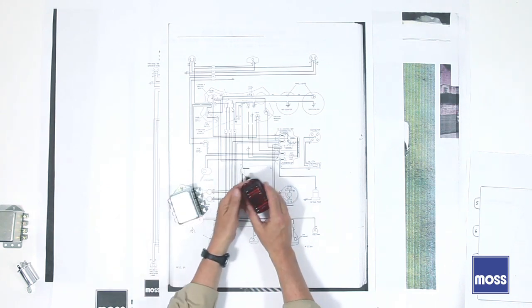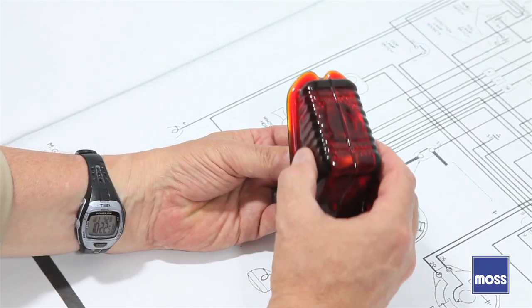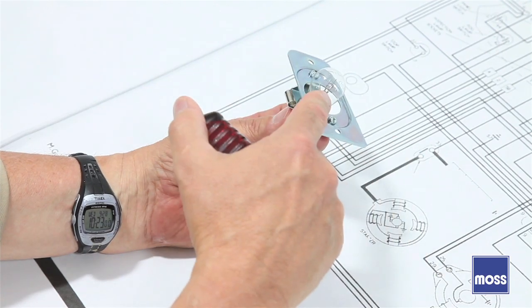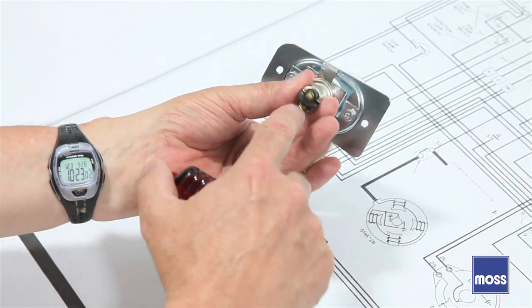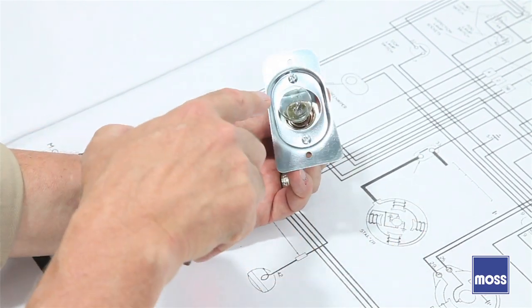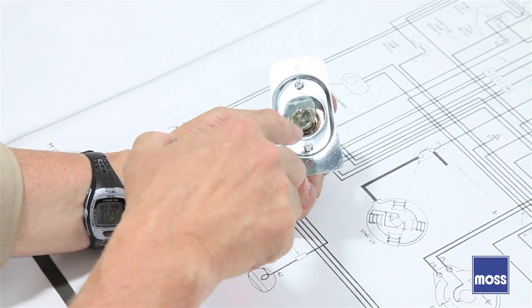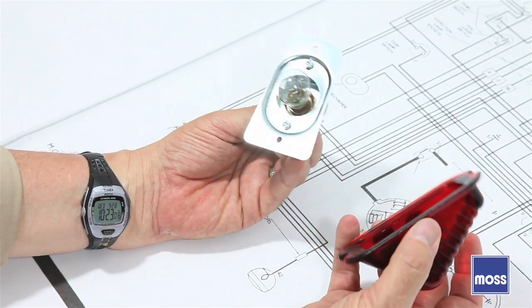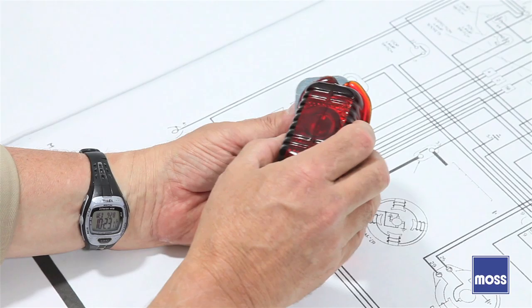This light that I've got here is from the back of an MGTD. And if you look at the back of it, you're probably not going to see it very well, but there's only two terminals or two filaments inside here. This only has a brake light and a running light. It has no provision for a turn signal lamp.